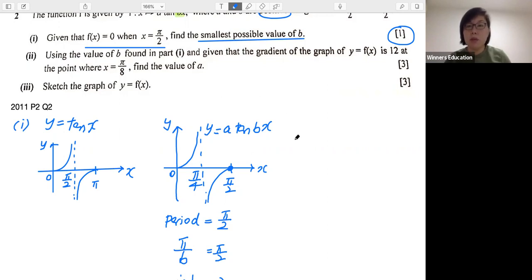Now, what is part two all about? Let me continue my working here. The keyword here, gradient of the graph. So what is gradient?